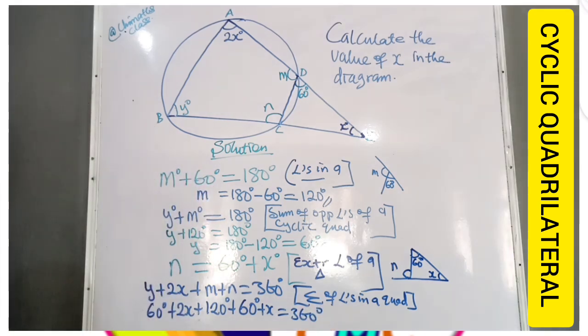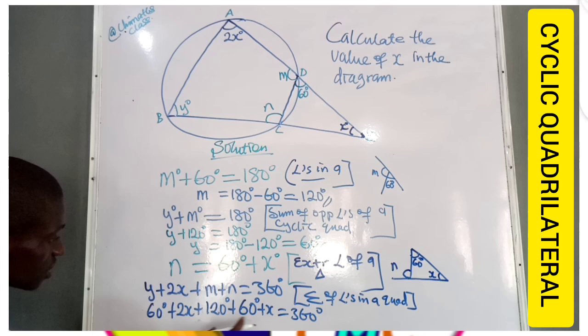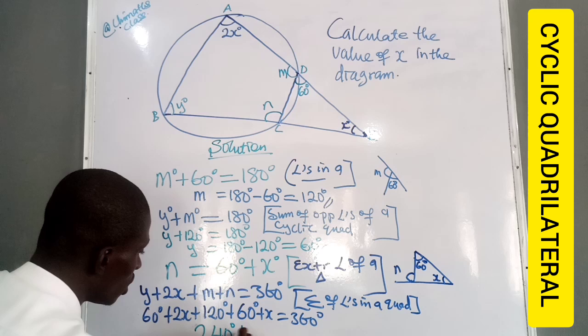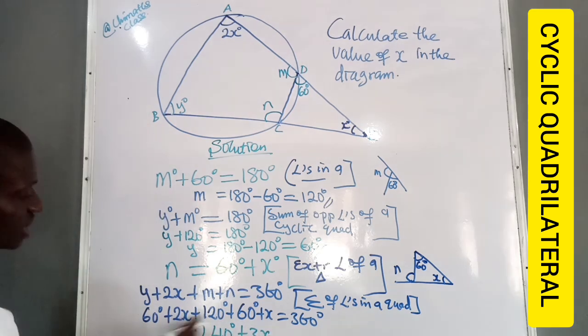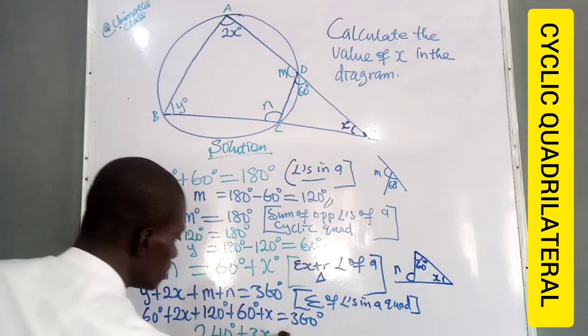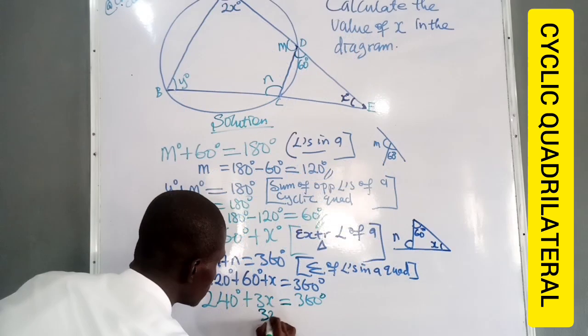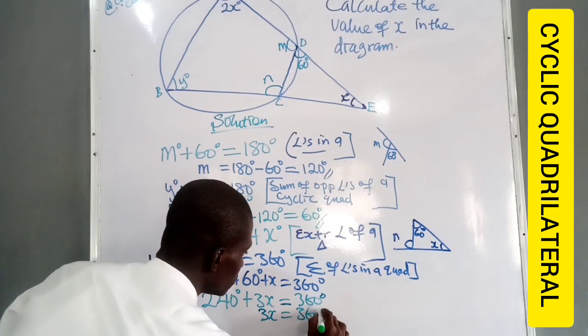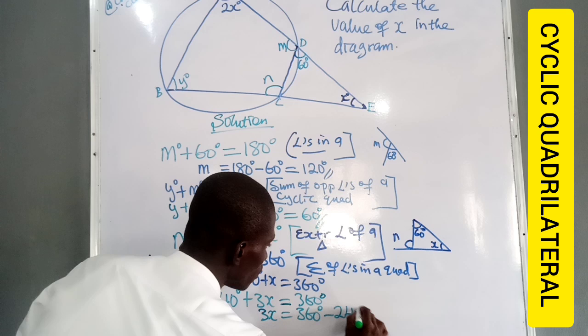Collect like terms. So when we collect like terms, 60 plus 60 is 120 plus 120, 240 degrees plus 3X, because 2X plus X will give us 3X.